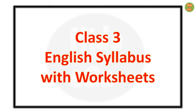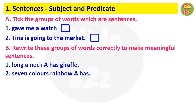Class 3 English syllabus with worksheets. The first topic is sentences with subject and predicate. A sentence is a group of words arranged in the correct order that makes complete sense. A sentence always starts with a capital letter and ends with a full stop. Now some worksheets — the first one is: tick the groups of words which are sentences.